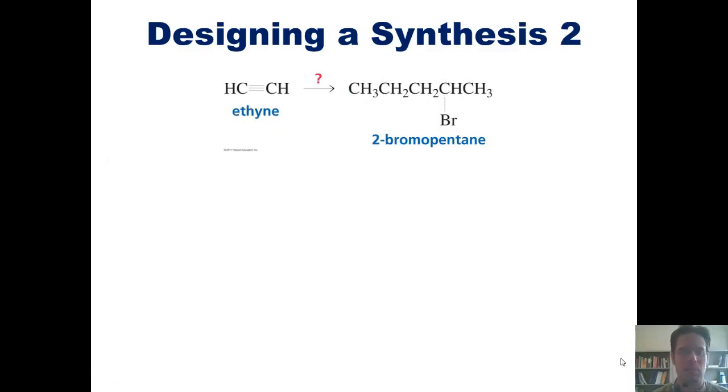Here's another synthetic problem for you to consider. How in the world could I convert this molecule, ethyne, which is also known commonly as acetylene, the same molecule found in acetylene gas torches, into this product, 2-bromopentane?